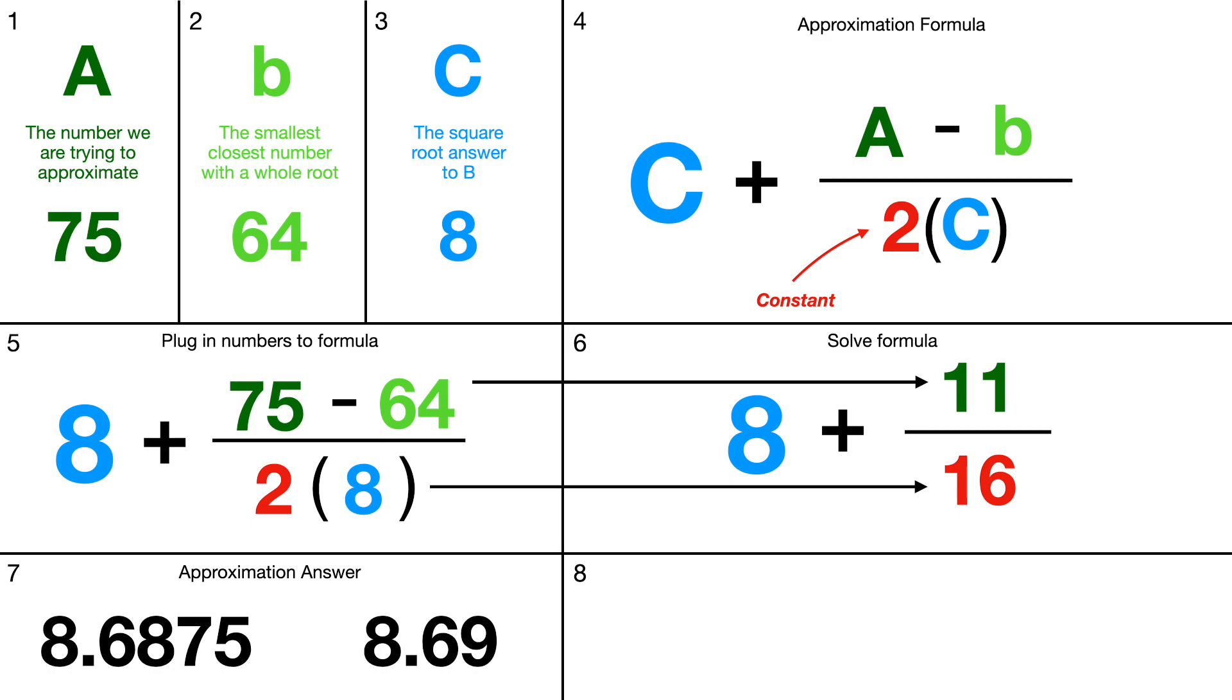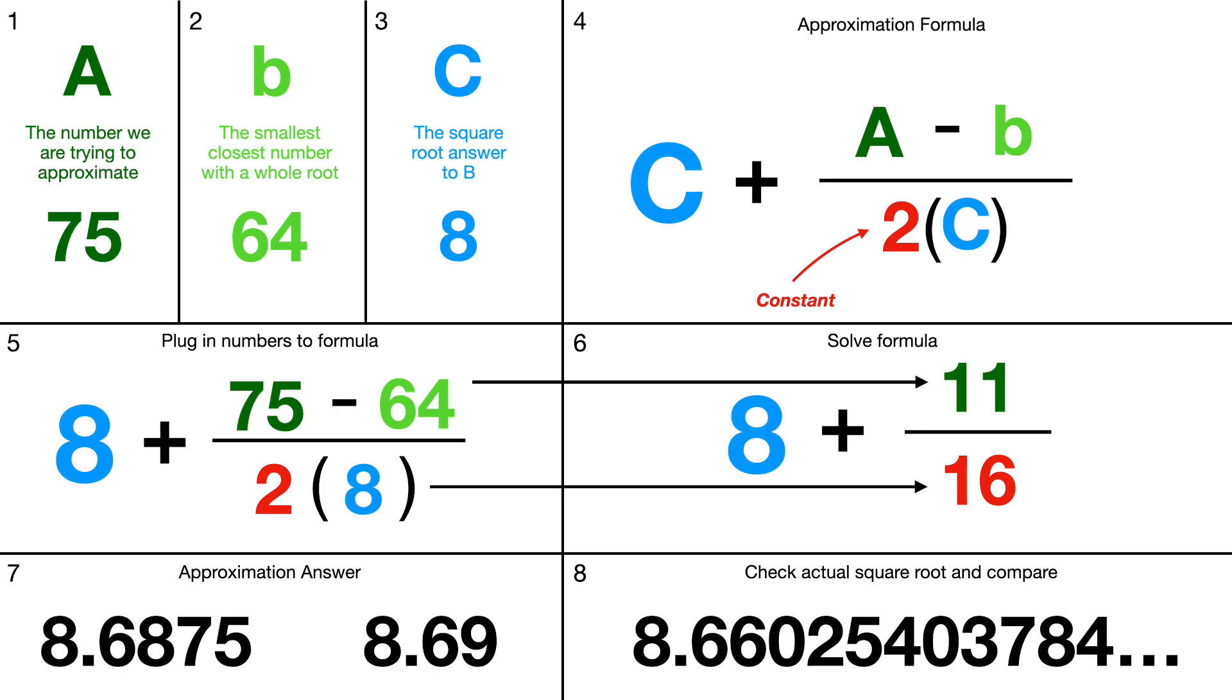On step 8, you check the actual square root and compare to see if it's close. If it's close, you did it right. The actual square root is 8.66602 and keeps going on forever. Our answer is very close, so we know we did it right.